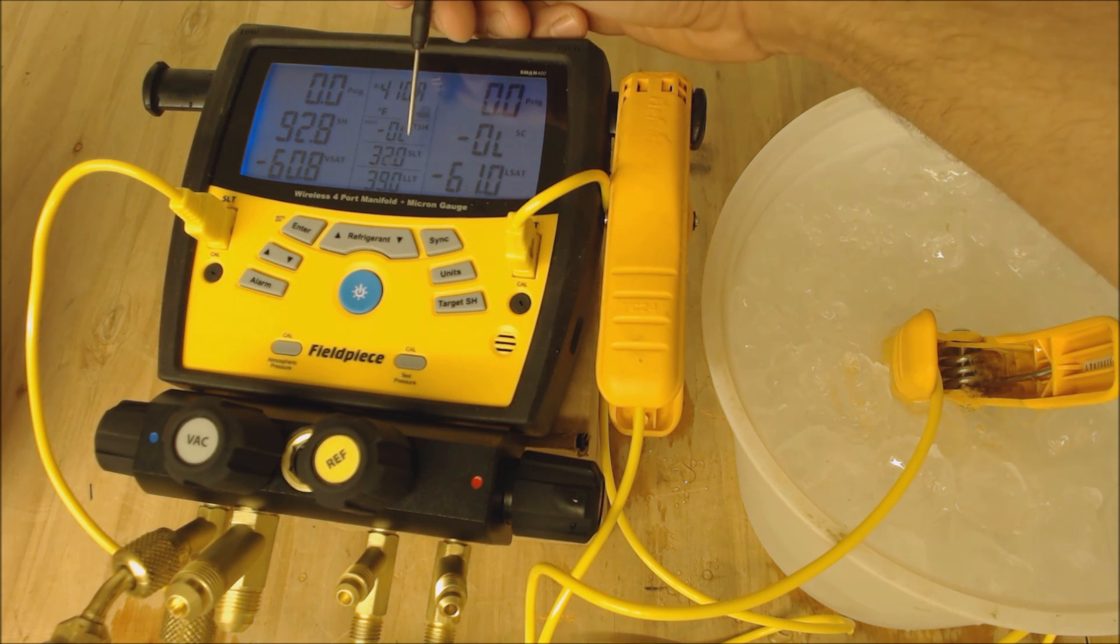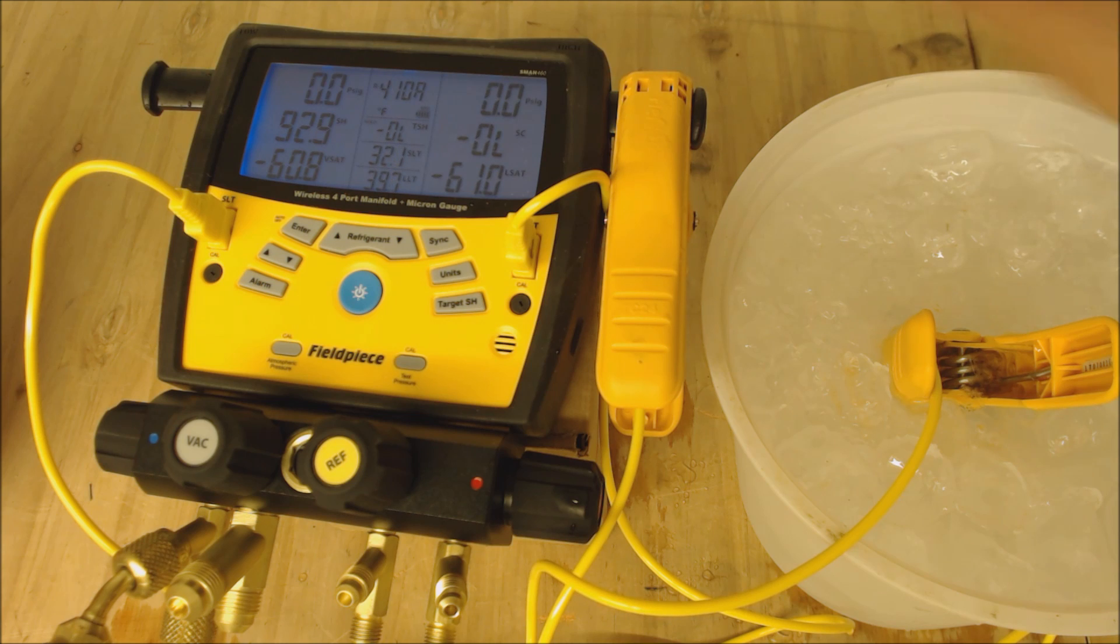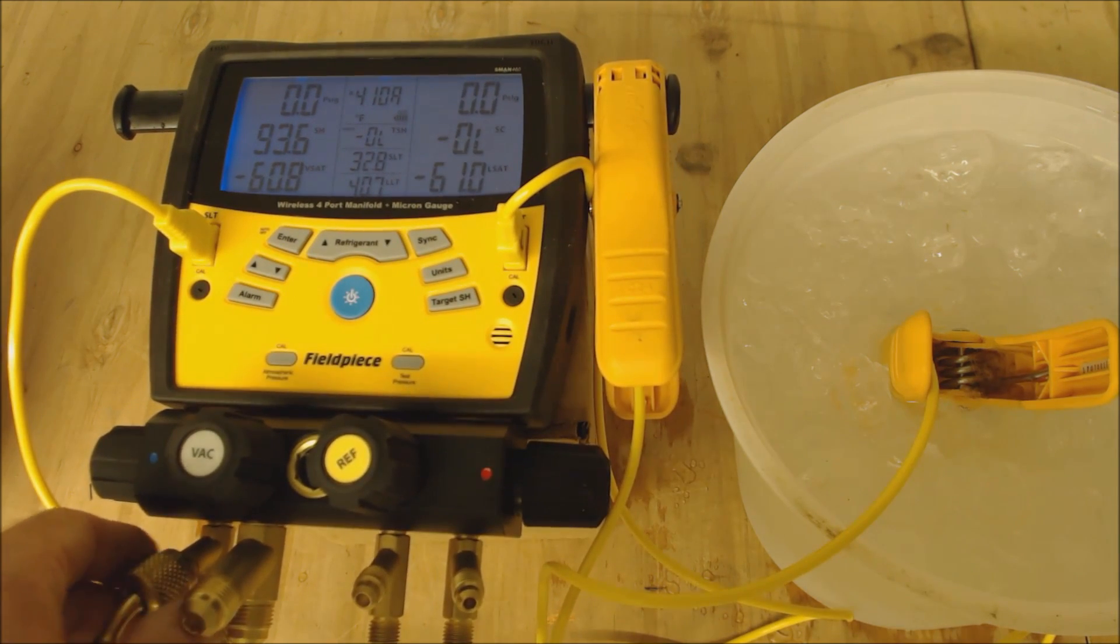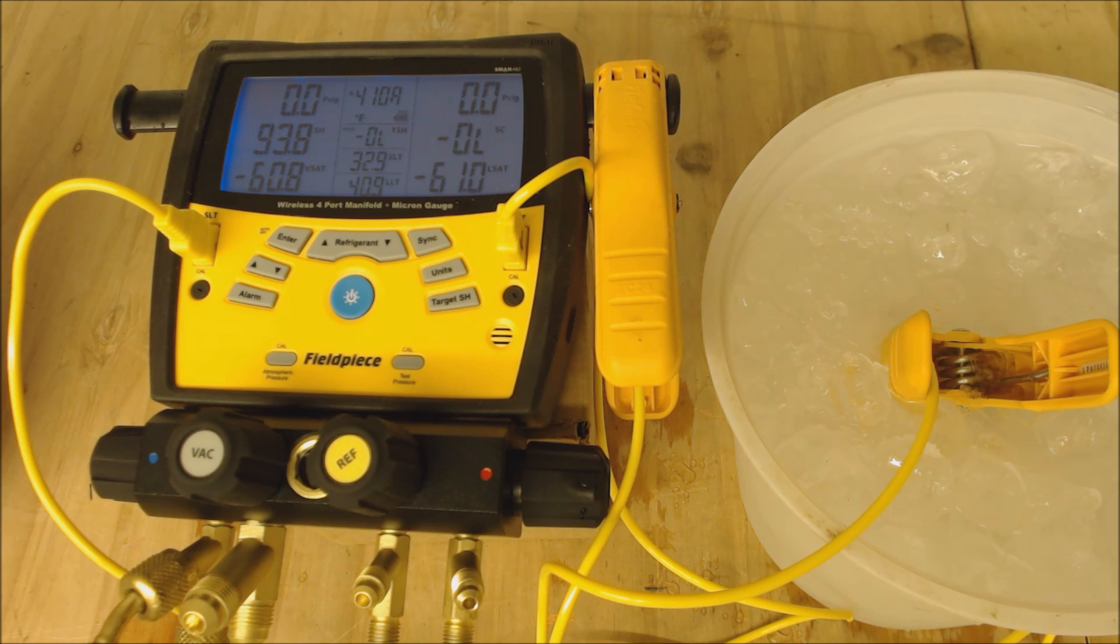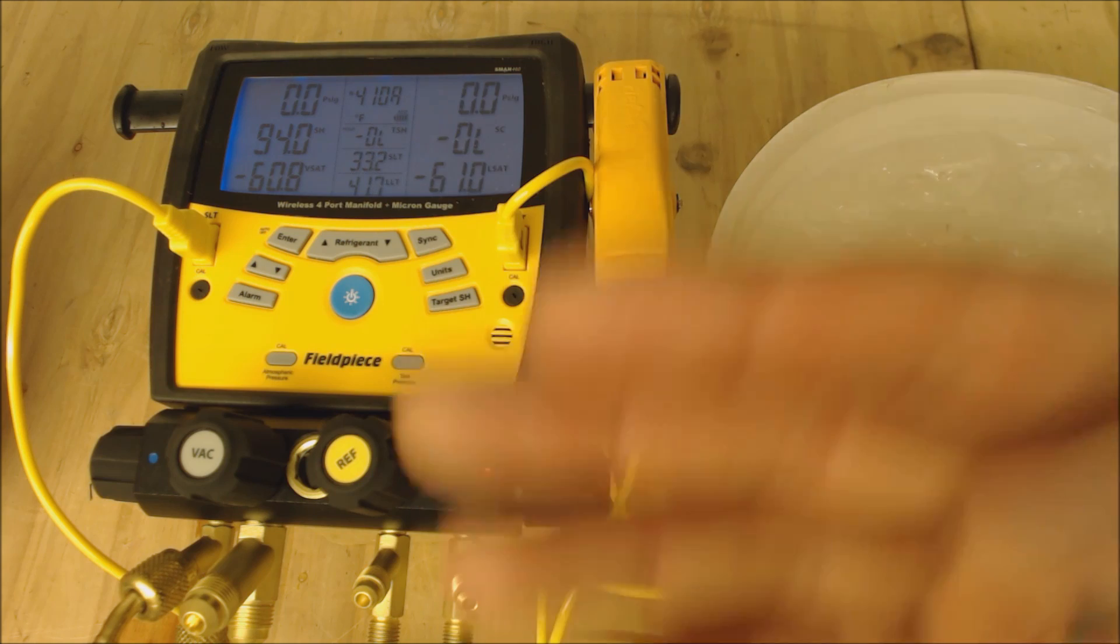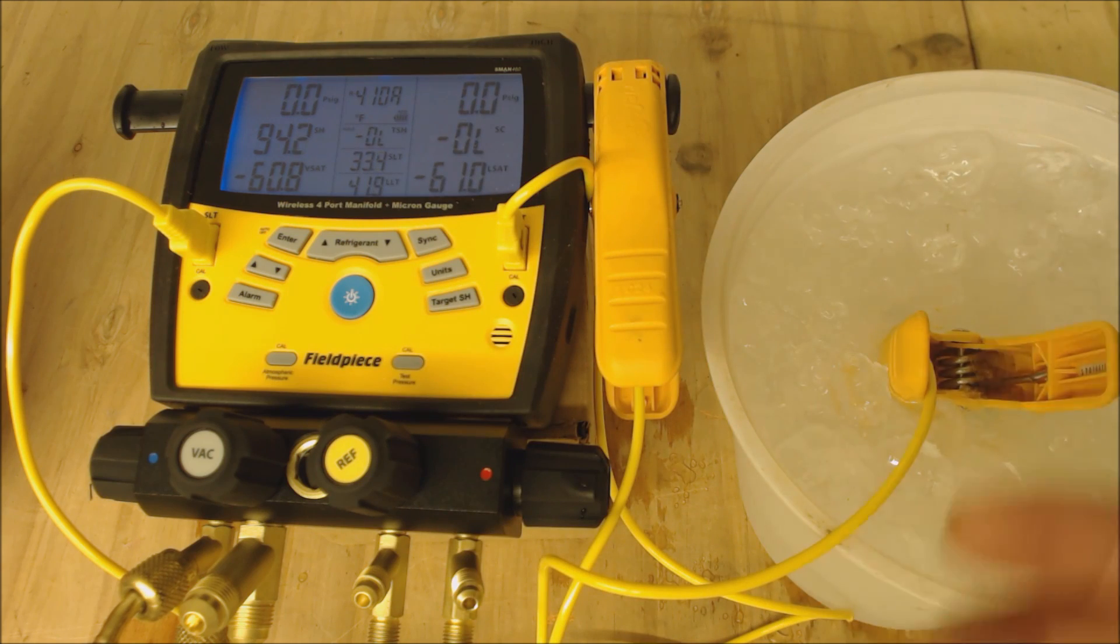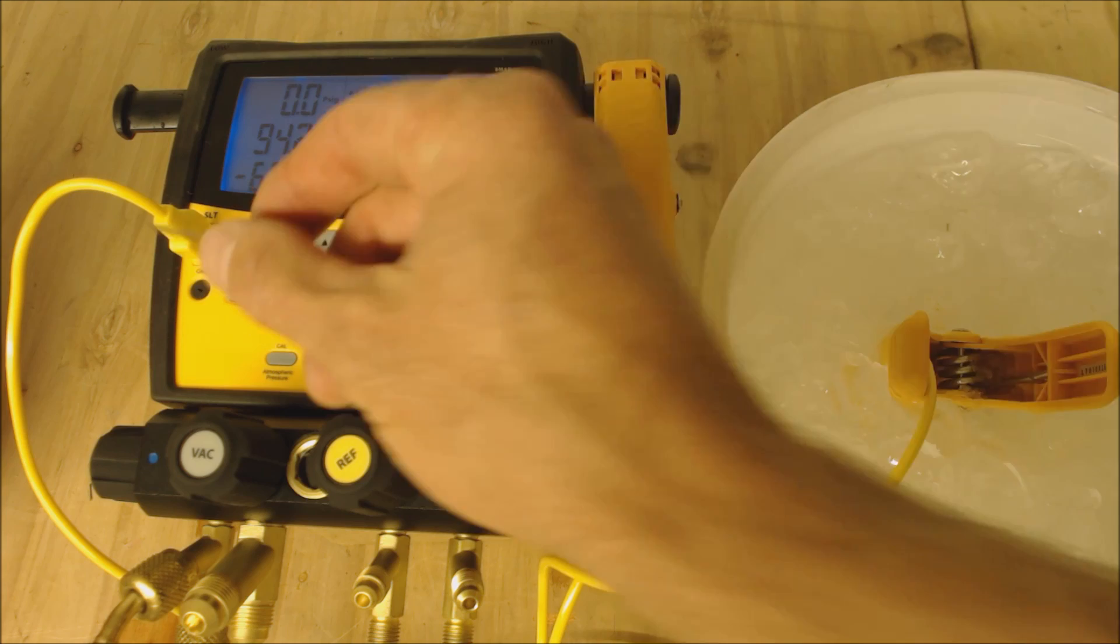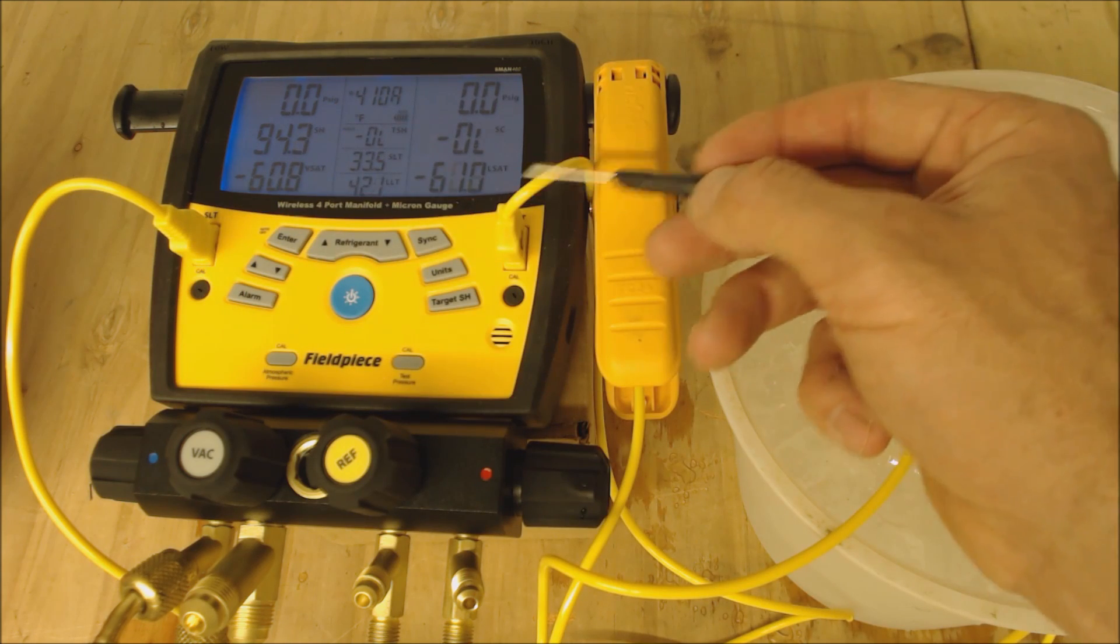Now we're looking at our suction line temperature. We are right there and fairly close, but we're going to give it some time to absorb the temperature. Whether you get this out of the box new or it's just been a while, you want to make sure you recalibrate the temperature clamps because if it got tugged or something, the resistance value might have changed.